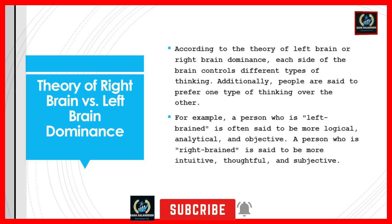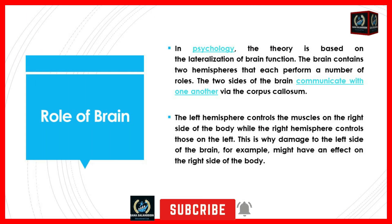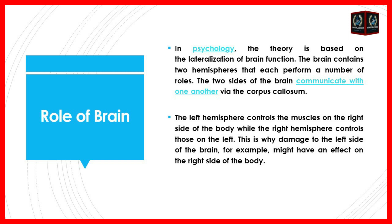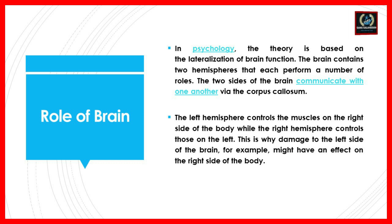In psychology, this theory is based on the lateralization of brain function. The brain contains two hemispheres that communicate with each other via the corpus callosum. The left hemisphere controls the muscles on the right side of the body, while the right hemisphere controls those on the left. That is why damage to the left side of the brain, for example, might have an effect on the right side of the body.